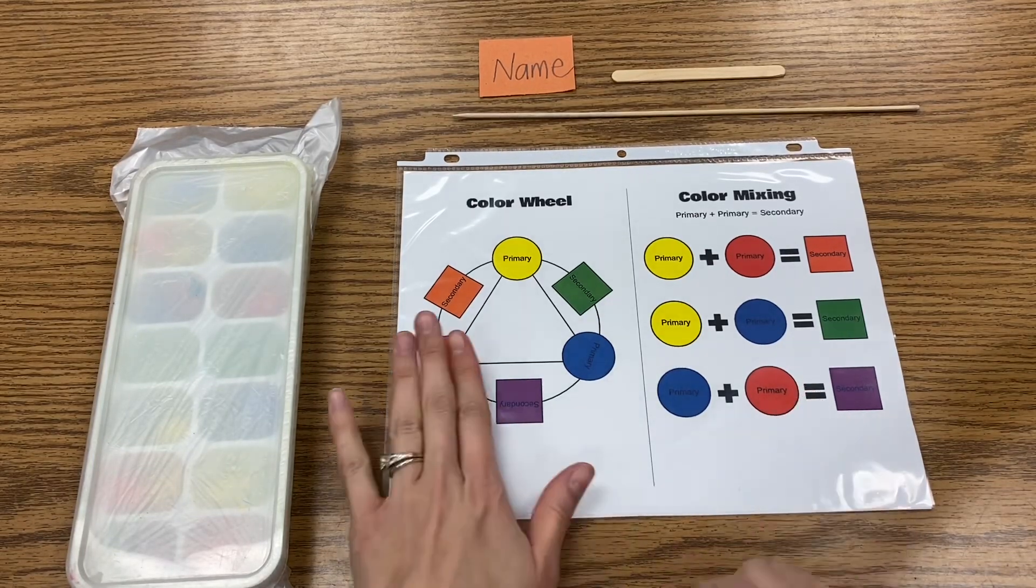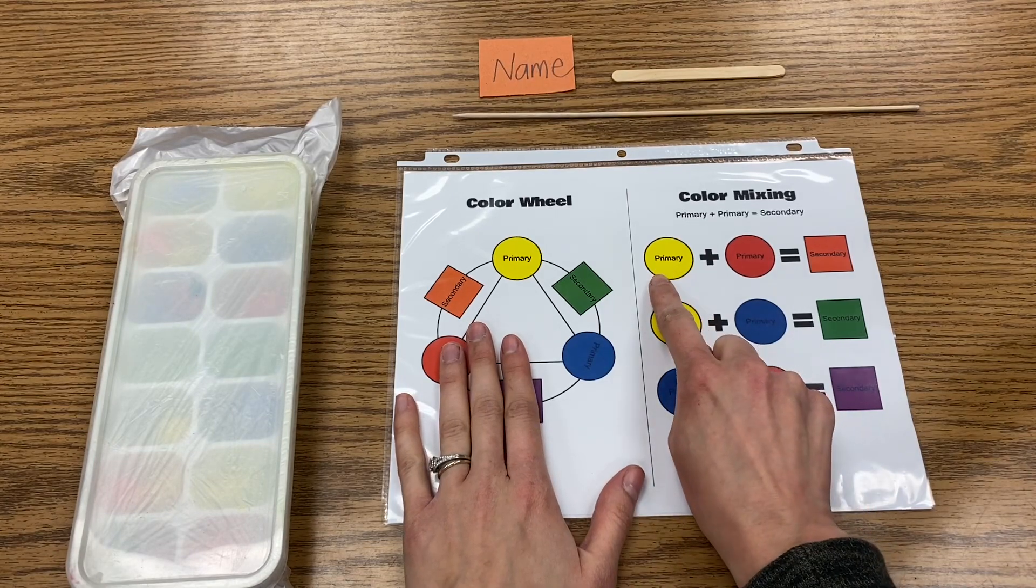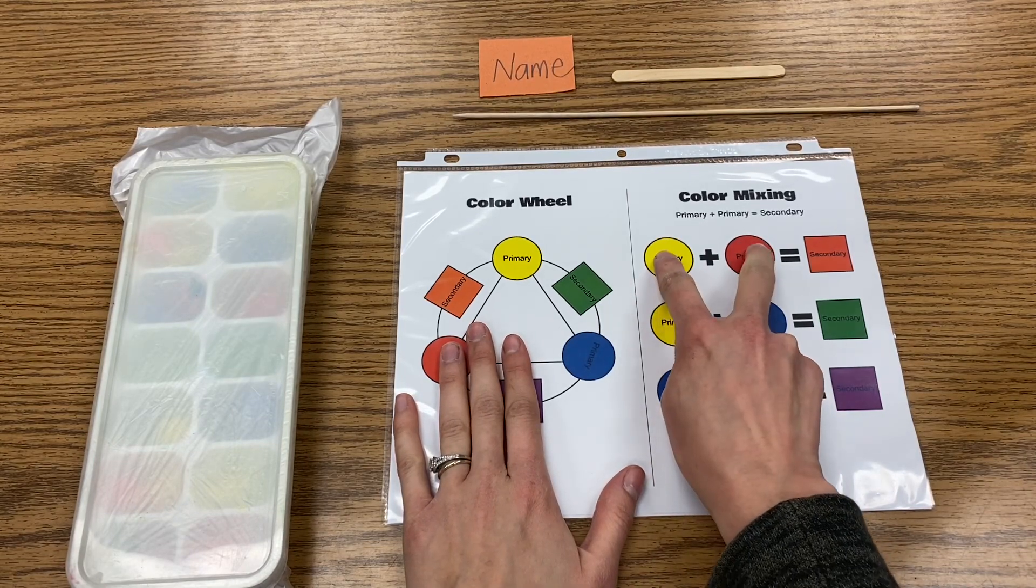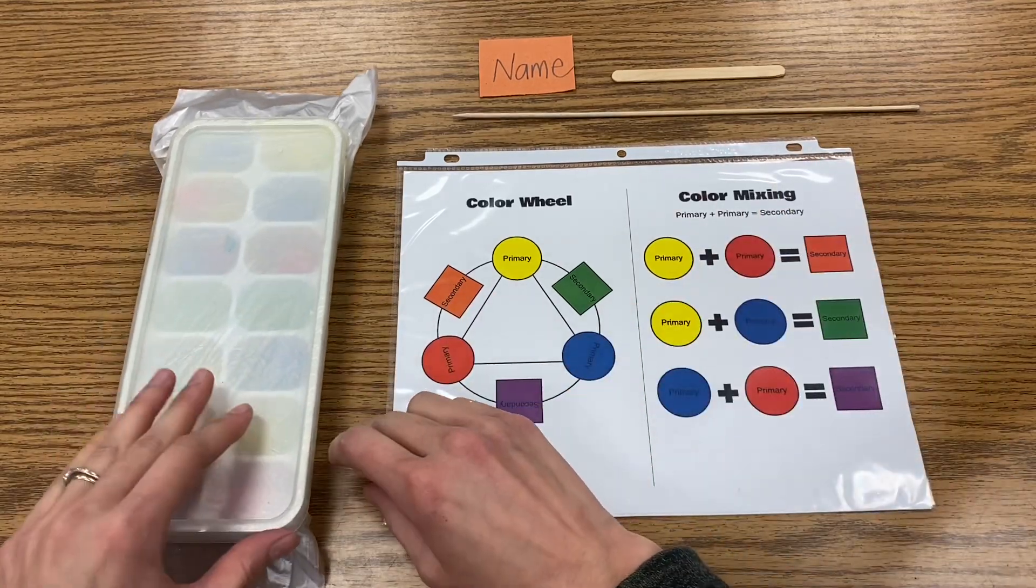Today you're going to get a sheet that has a color wheel on it as well as some art math, where it shows your primary colors being added together to create a secondary color. You are going to begin today...